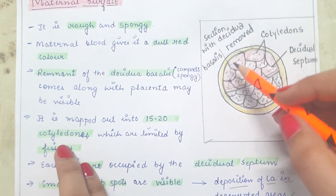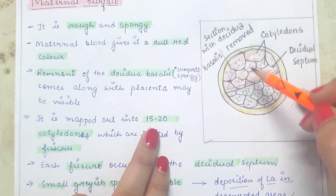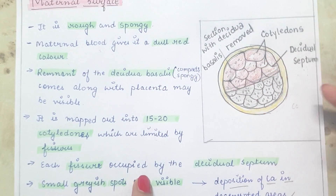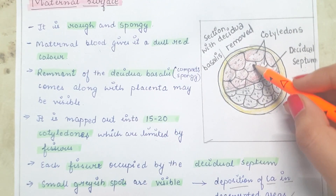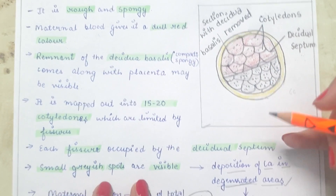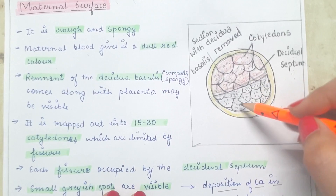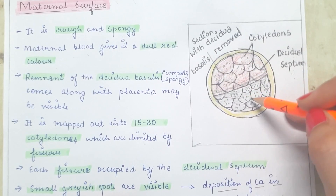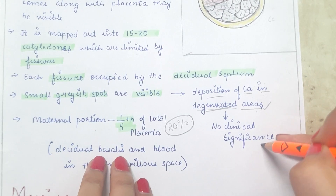Approximately 15 to 20 cotyledons are present at the maternal surface, limited by fissures or grooves occupied by the decidual septum. Small grayish spots are visible at the maternal surface due to deposition of calcium in degenerated areas as a result of aging of the placenta at term, but these spots have no clinical significance.